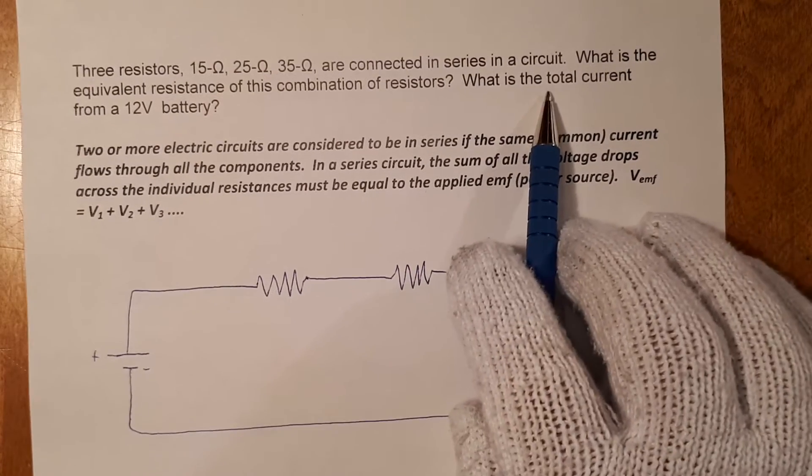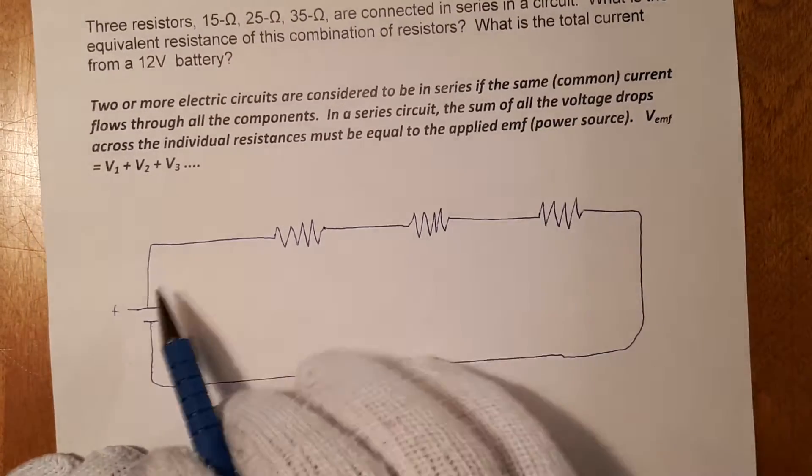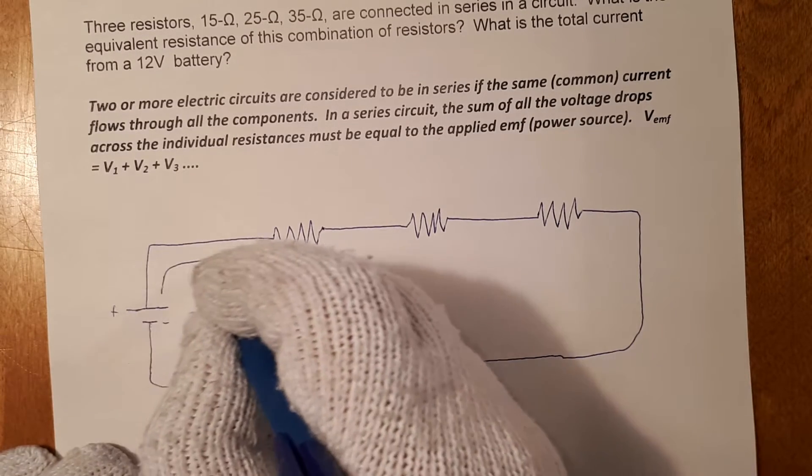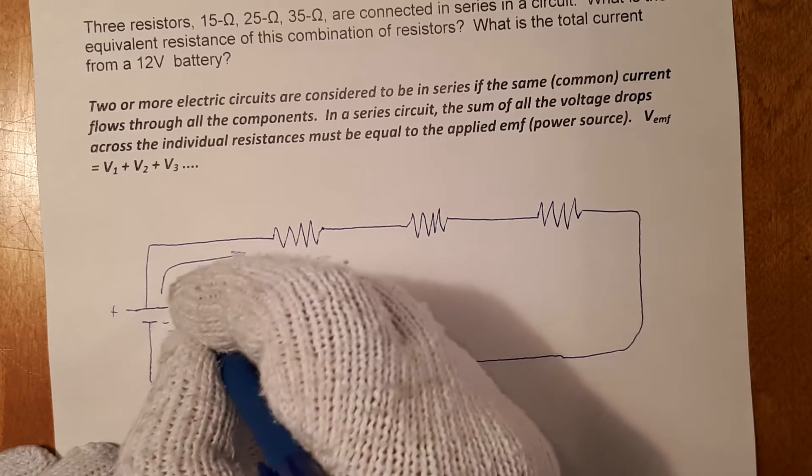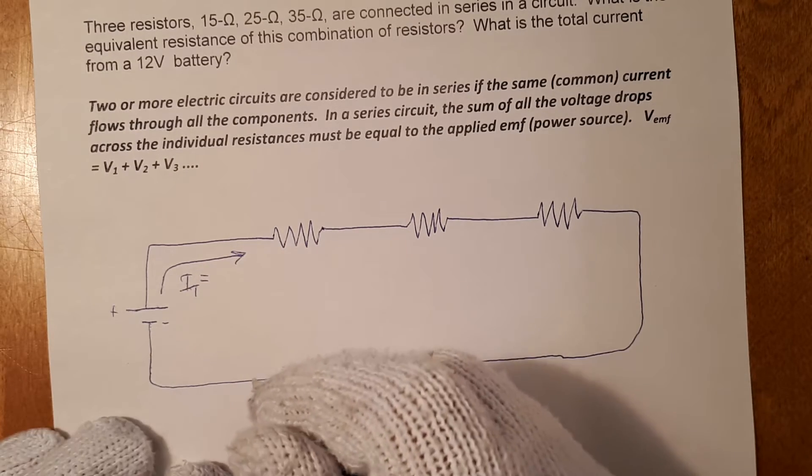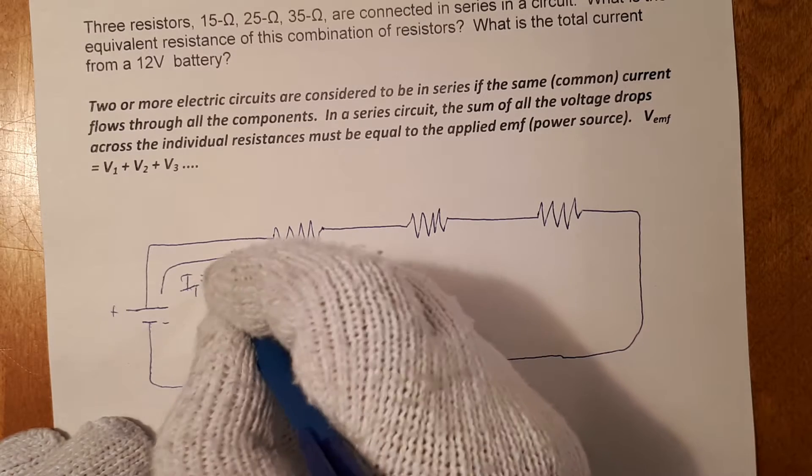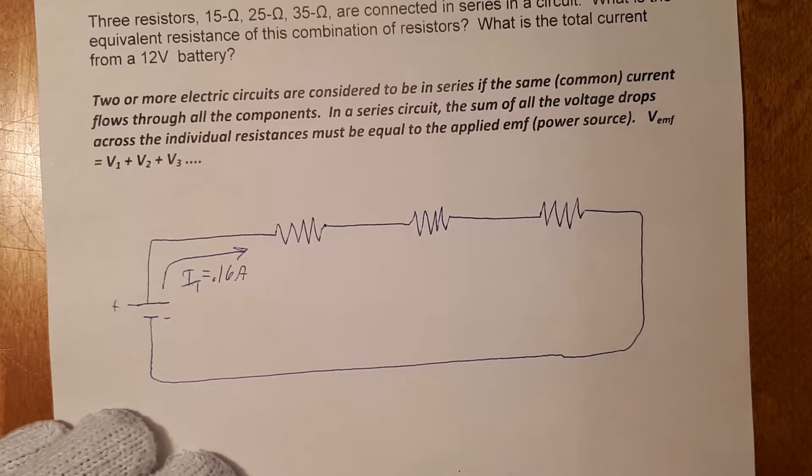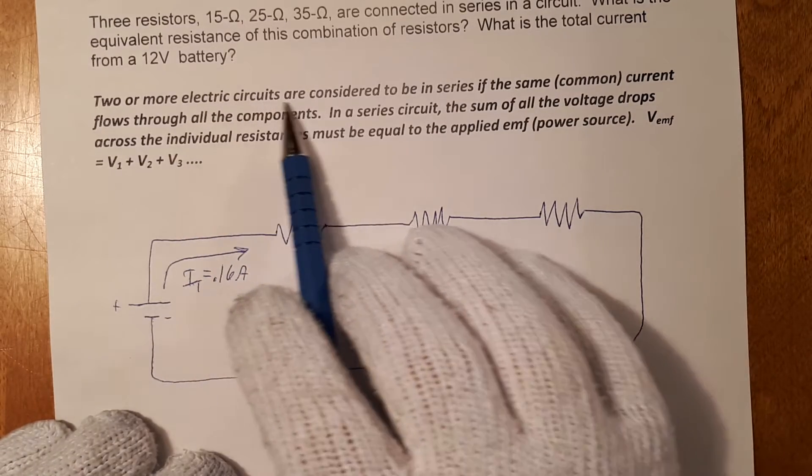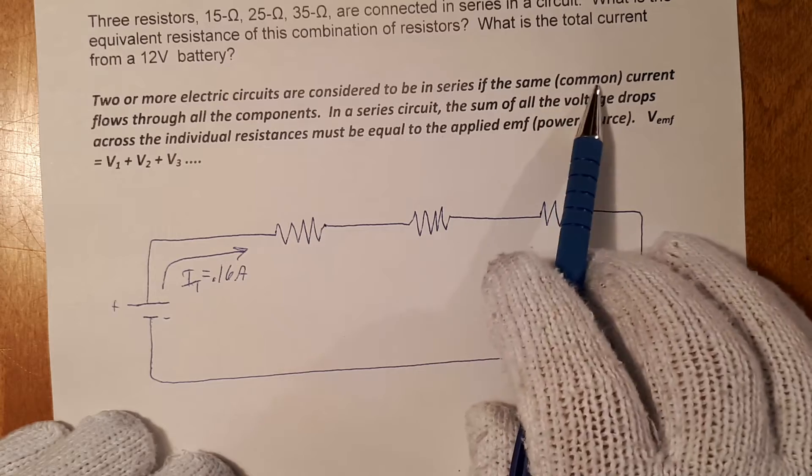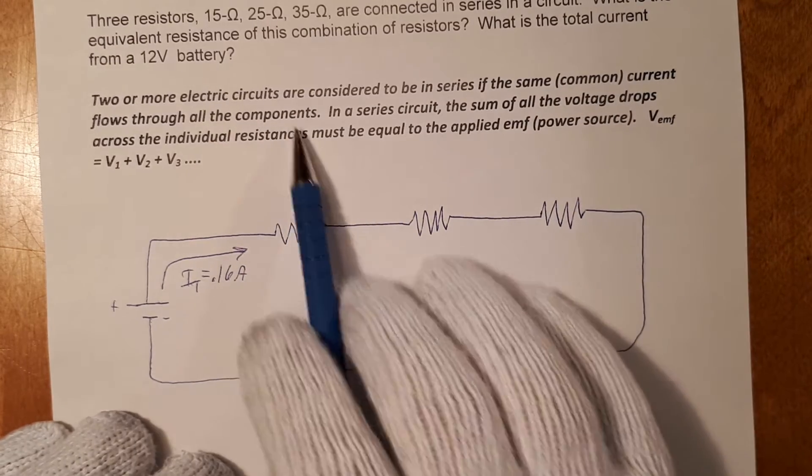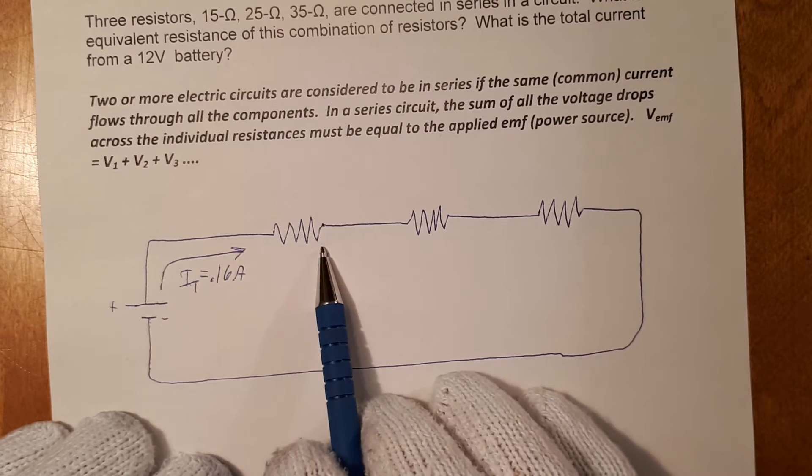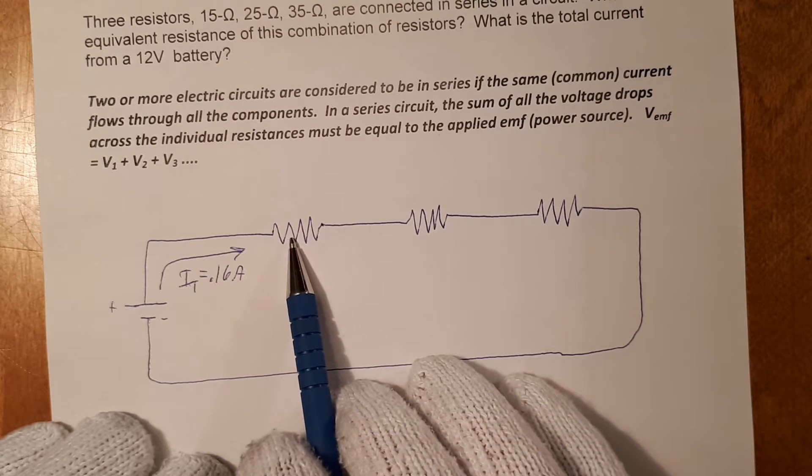The total current I solved in a previous video, current leaving the power source, using convention travels this way. Current total was solved to be 0.116 amps. And it says here two or more electric circuits are considered to be in series if the same current flows through all the components. So in a series circuit, this current flows through this resistance and this one and this one.